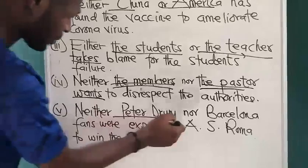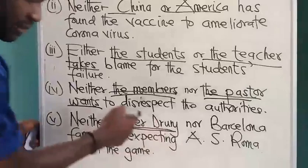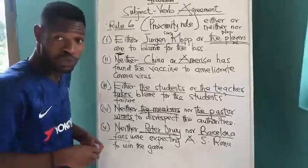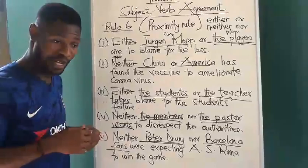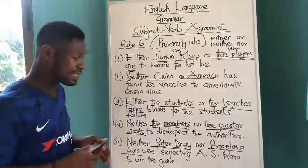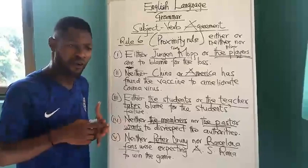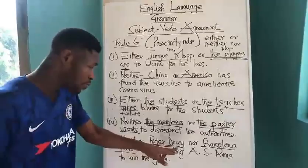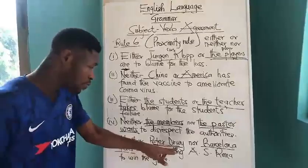'Neither Peter Drury nor Barcelona fans were expecting A.S. Roma to score.' Peter Drury is singular, Barcelona fans is plural. Therefore it is Barcelona fans — the closer subject — that agrees with the verb 'were'. This relates to a Champions League match that Barcelona fans don't want to hear about. There's a debate about the Fernando Torres goal in the 2012 Champions League encounter with Chelsea, and then A.S. Roma's result against Liverpool. Neither Peter Drury, who was the commentator on the day, nor the Barcelona fans were expecting A.S. Roma to win and eliminate them.